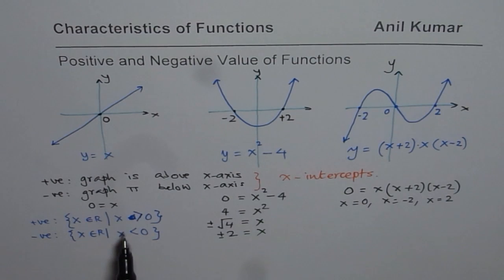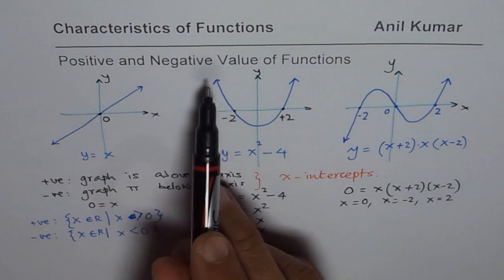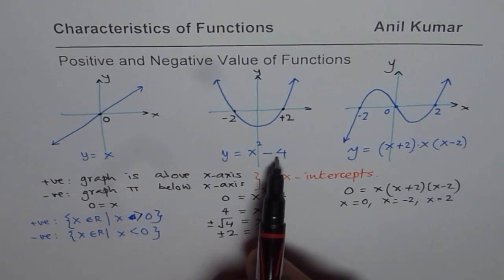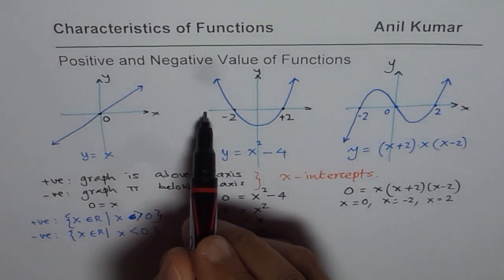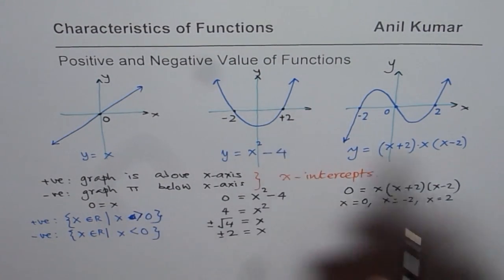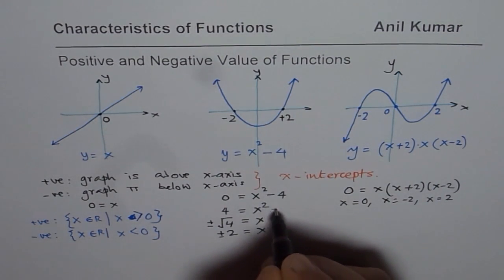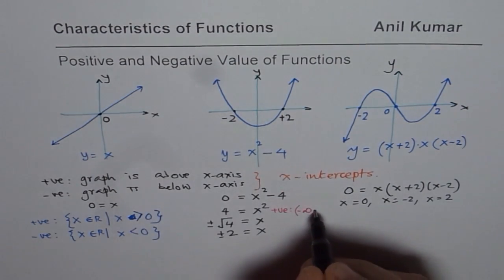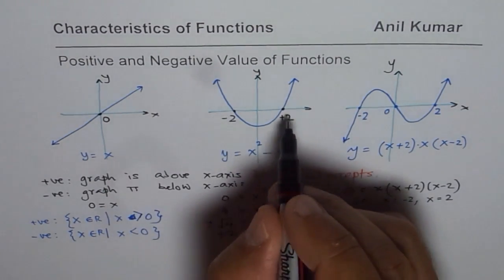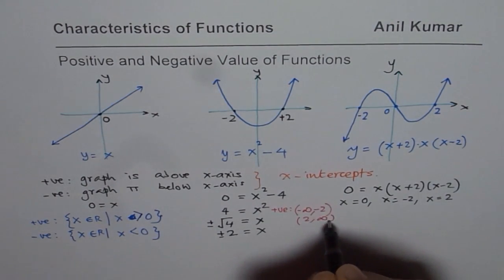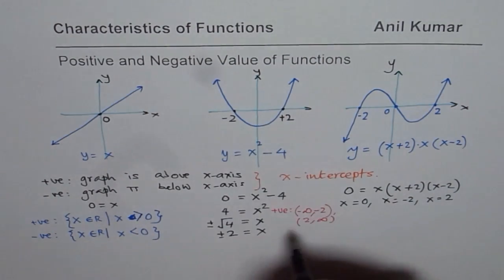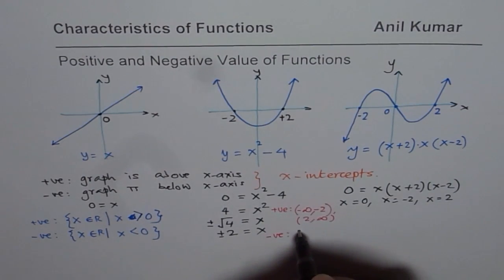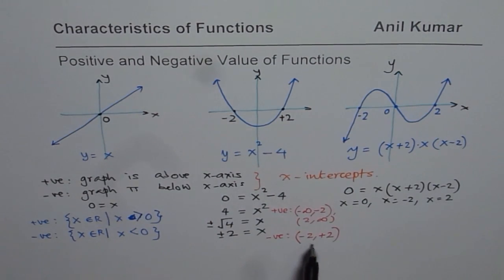There are different ways of writing these intervals. The parabola y equals x squared minus 4 is positive in the interval from minus infinity to minus 2 and from 2 to infinity. We write this as the interval (minus infinity, minus 2) union (2, infinity). It is negative between minus 2 and plus 2, so the interval is (minus 2, plus 2).